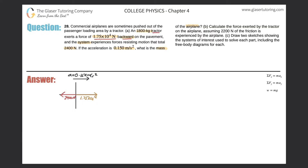So this value is 1.75 times 10 to the fourth. It looks like we've got everything we need to start solving this. It's in the x-axis, so we're going to use the sum of the forces in the x direction equals the mass of the system multiplied by the acceleration in that x direction.